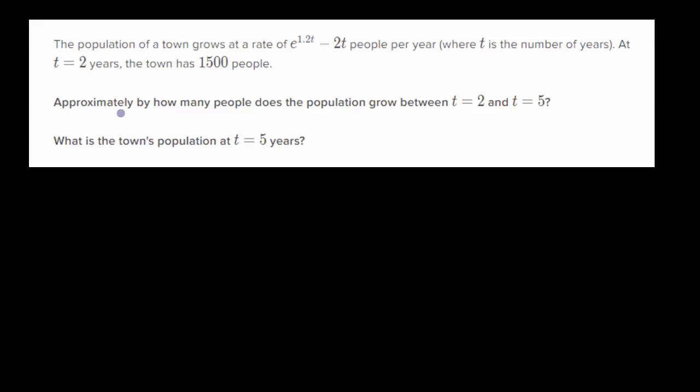First they ask us approximately by how many people does the population grow between t equals two and t equals five, and then what is the town's population at t equals five years? If we figure out this first question, the second question is straightforward. We figure out the amount that it grows and then add it to what we were at t equals two, add it to 1,500. So pause this video and see if you can figure it out.